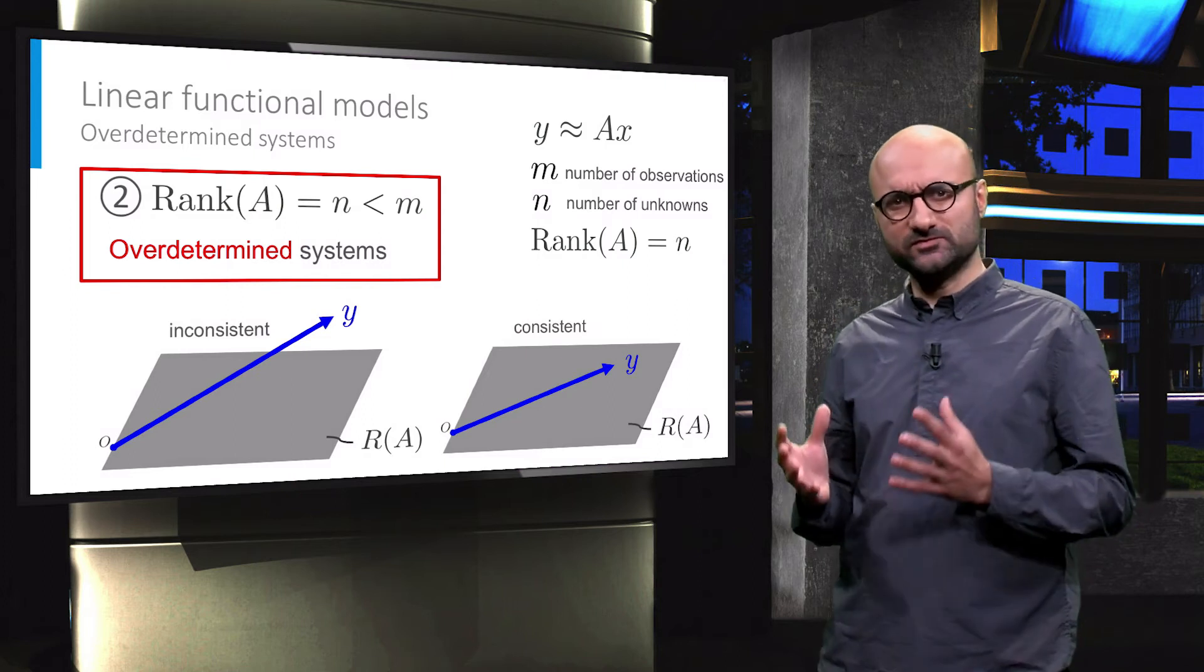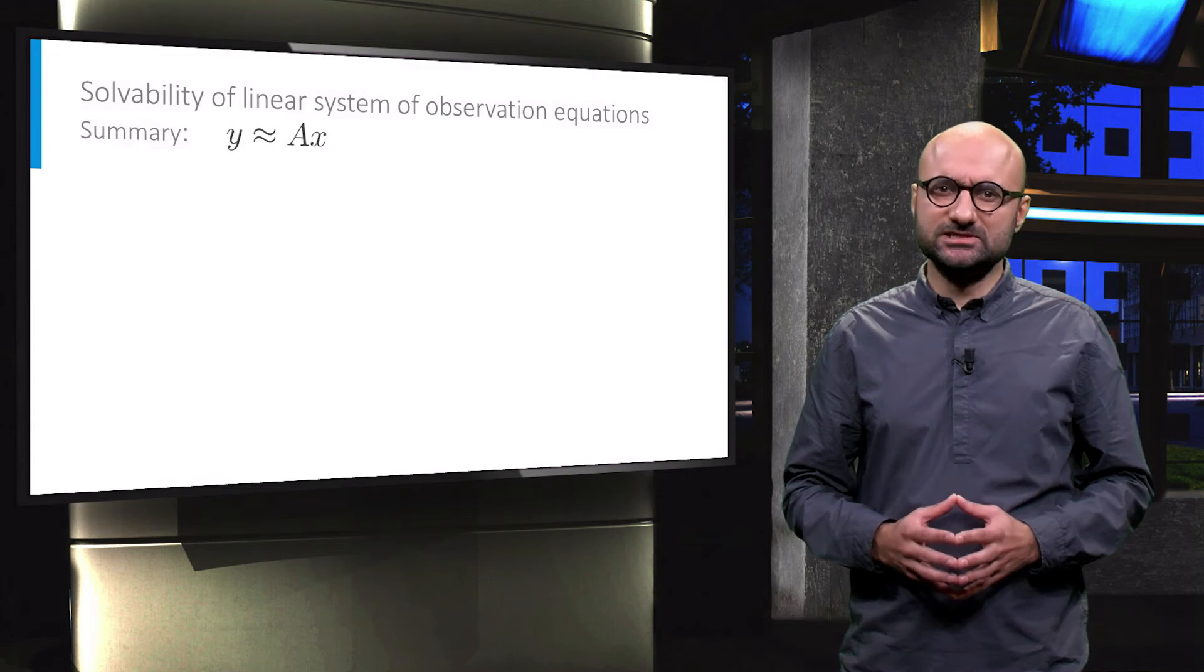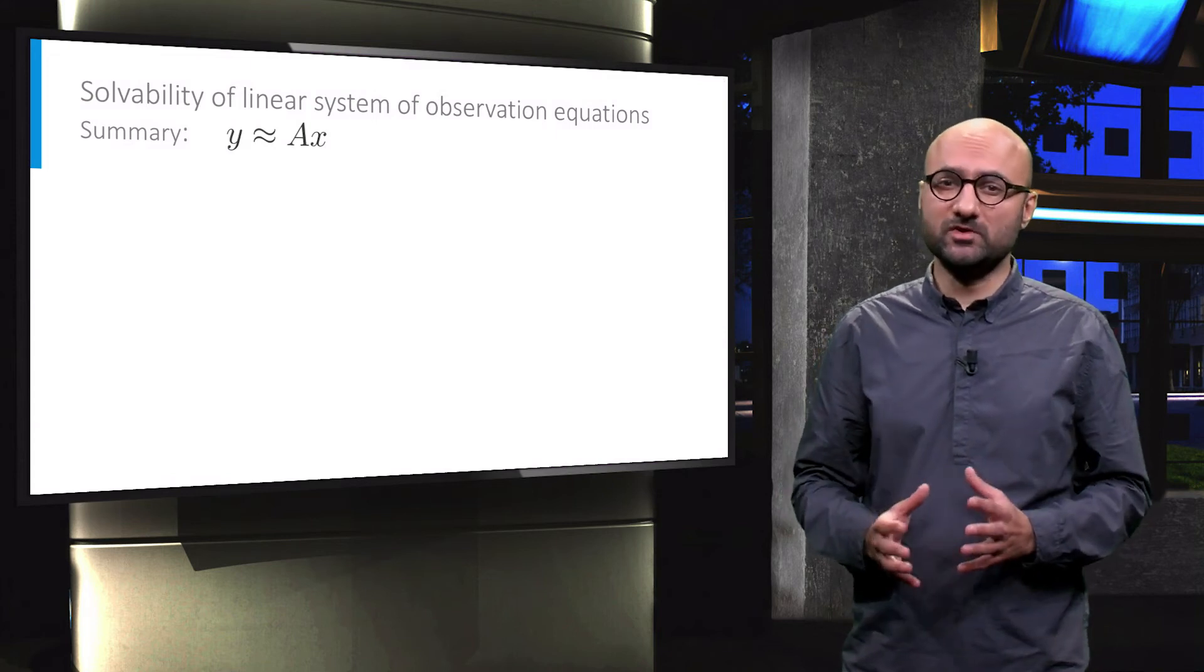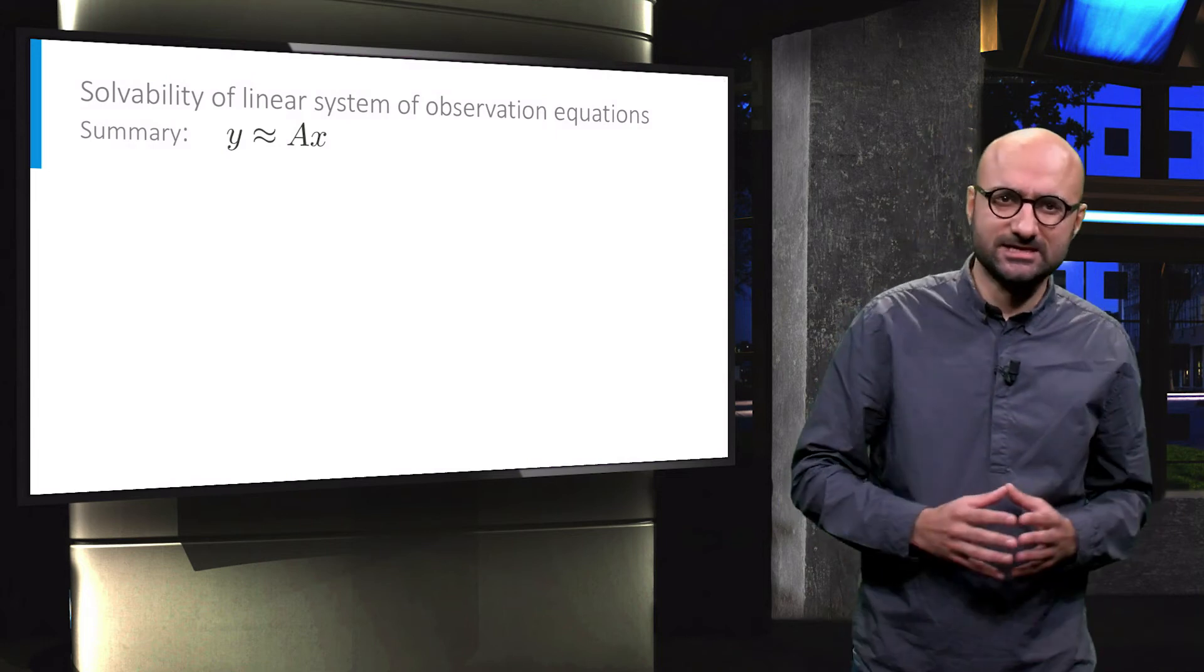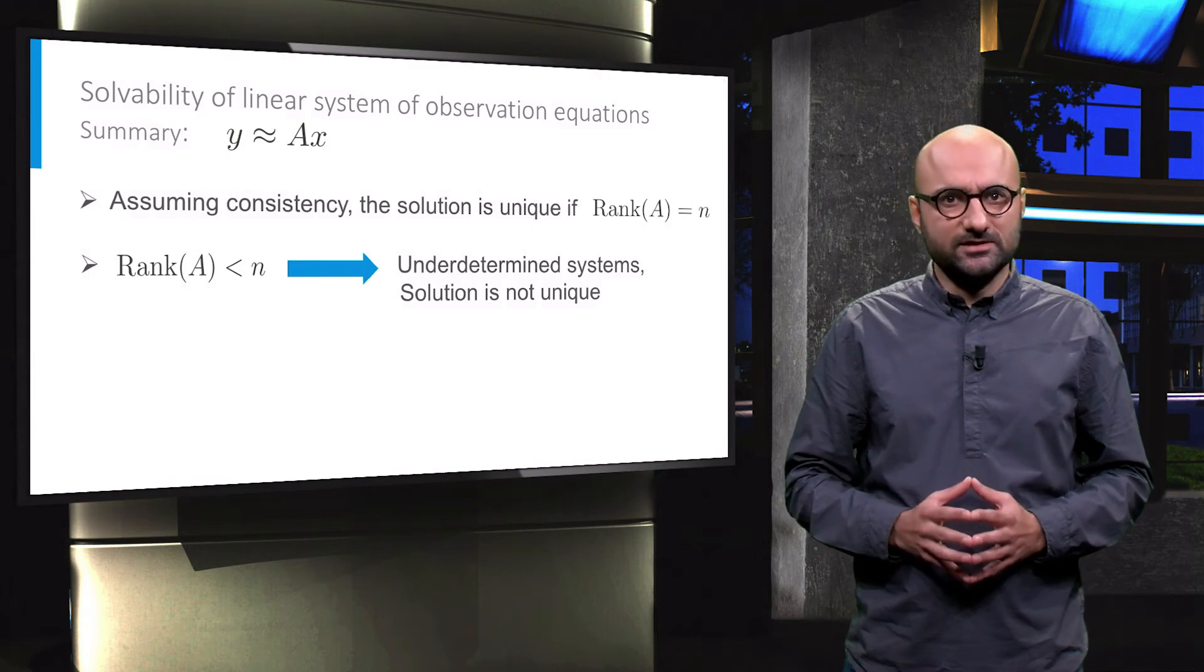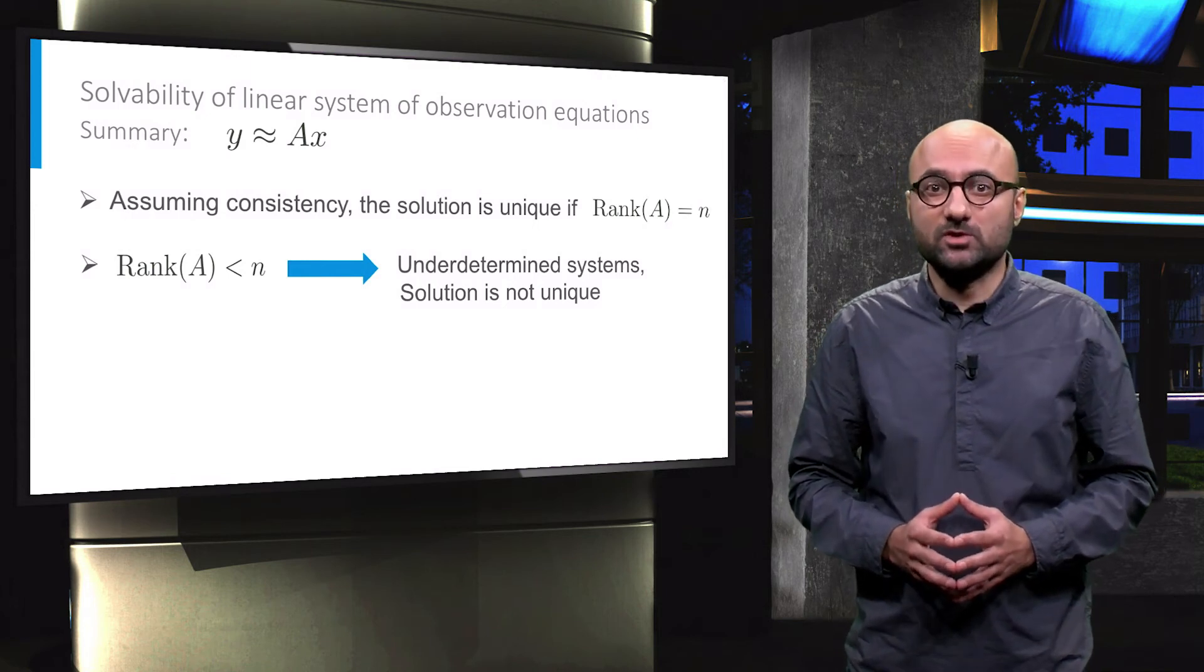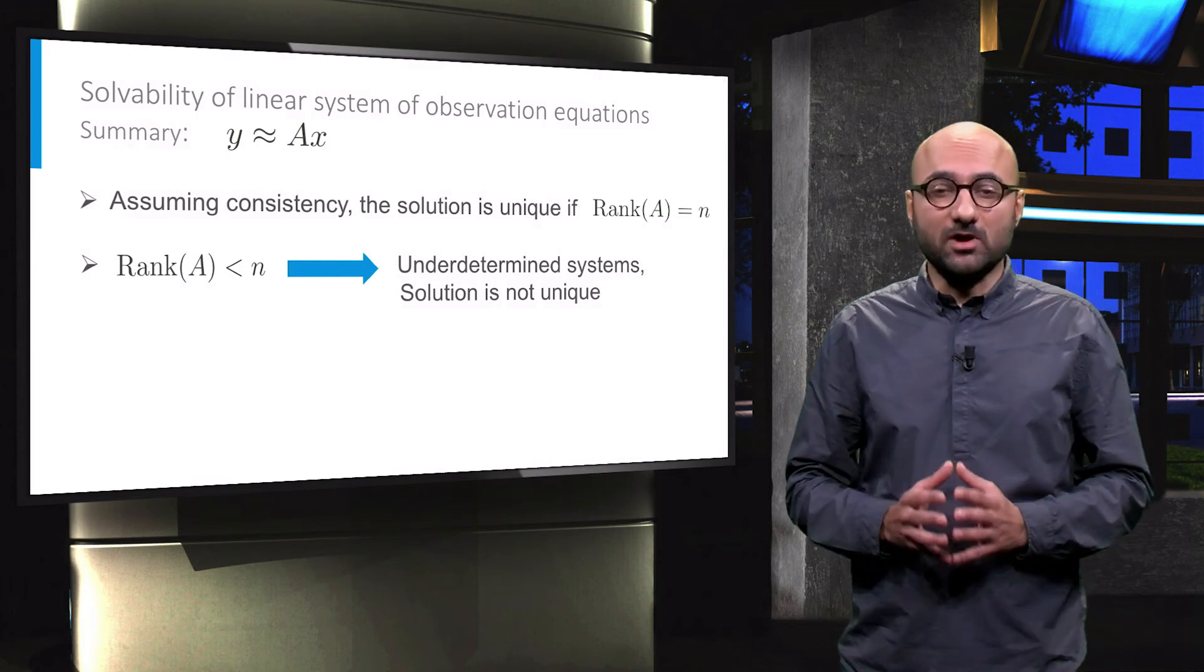In fact this is the central question of the rest of this course. In summary, in this section we learn that for the functional models in the form of system of observation equations, that is y equals Ax, assuming consistency, the solution is unique if the rank of A is equal to the number of unknowns. For cases with the rank of A smaller than n, the system is under-determined and there are more than one solution.